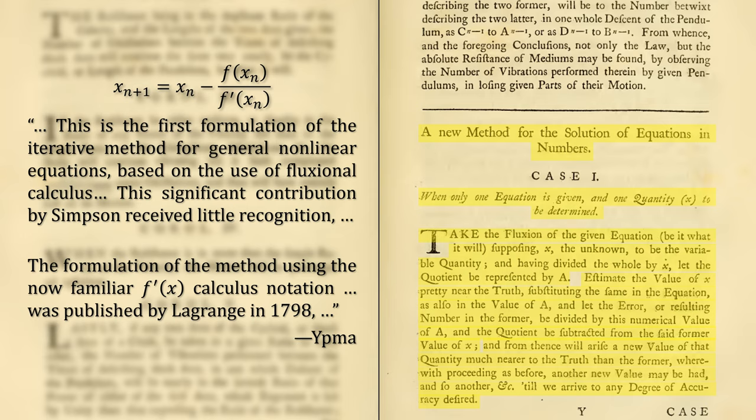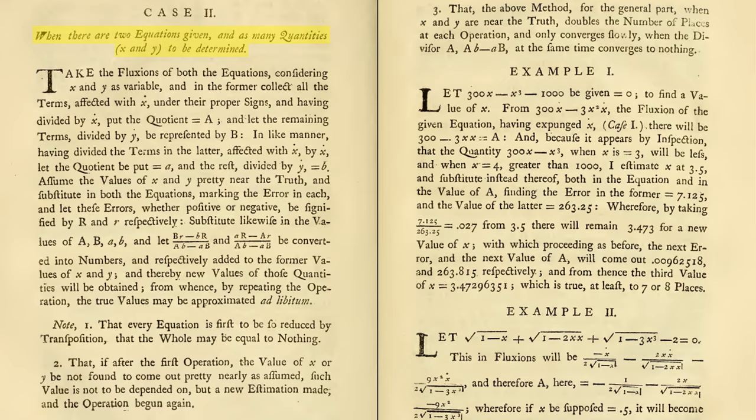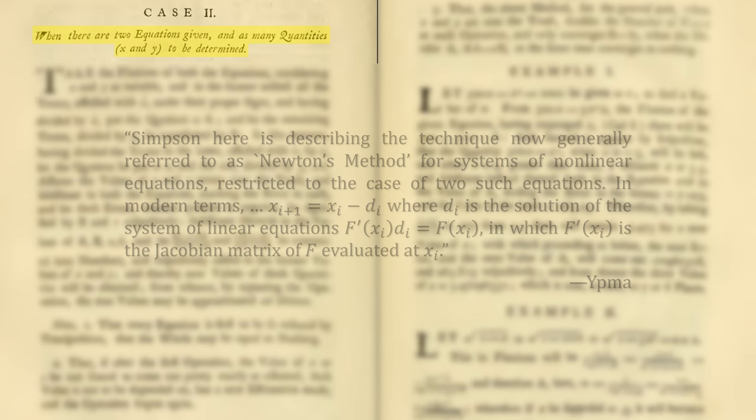But what does this have to do with solving systems? For that, we'll need to turn the page. Simpson describes when there are two equations given and as many quantities x and y to be determined. I'll spare you the details.